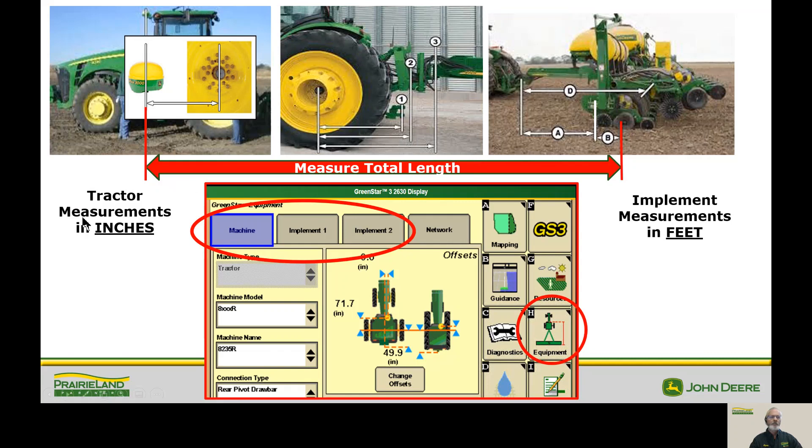I want to point out here, tractor measurements, these first two are in inches, whereas the implement is in feet. So now we've got the pivot point from the planter. Let's go from here. Letter A is a measurement from the pivot point of the planter to the front of the planter. Then letter B is from the front of the planter to where the seed hits the ground.